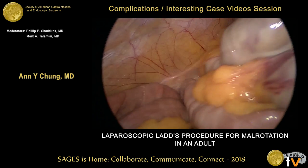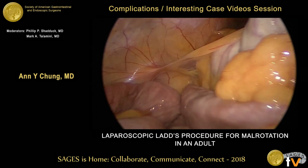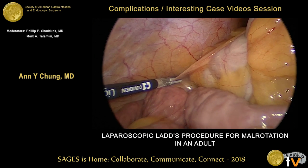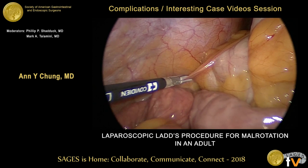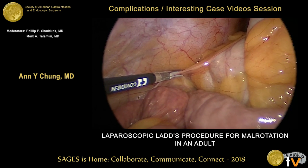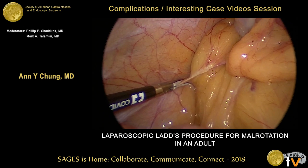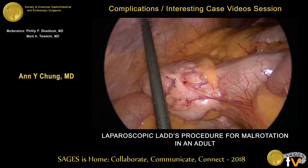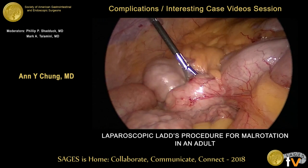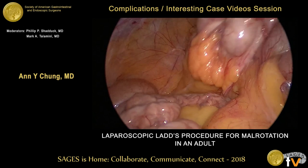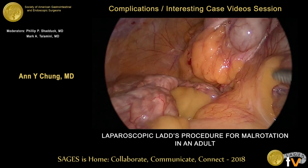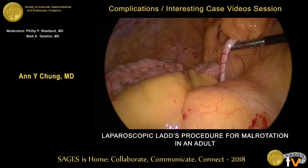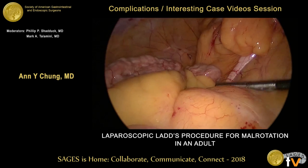On entrance into the abdomen, we identified the cecum and noted that it was in an abnormal location in the right upper quadrant. It was retracted medially and we began mobilizing the right colon along the white line of Toldt towards the hepatic flexure. The appendix was then identified and noted to be in a retrocecal location.